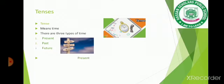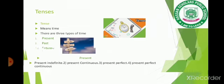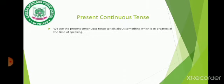Present is further divided into four parts: present indefinite, present continuous, present perfect, and present perfect continuous. Today we are going to deal with present continuous tense. We use the present continuous tense to talk about something which is in progress at the time of speaking.